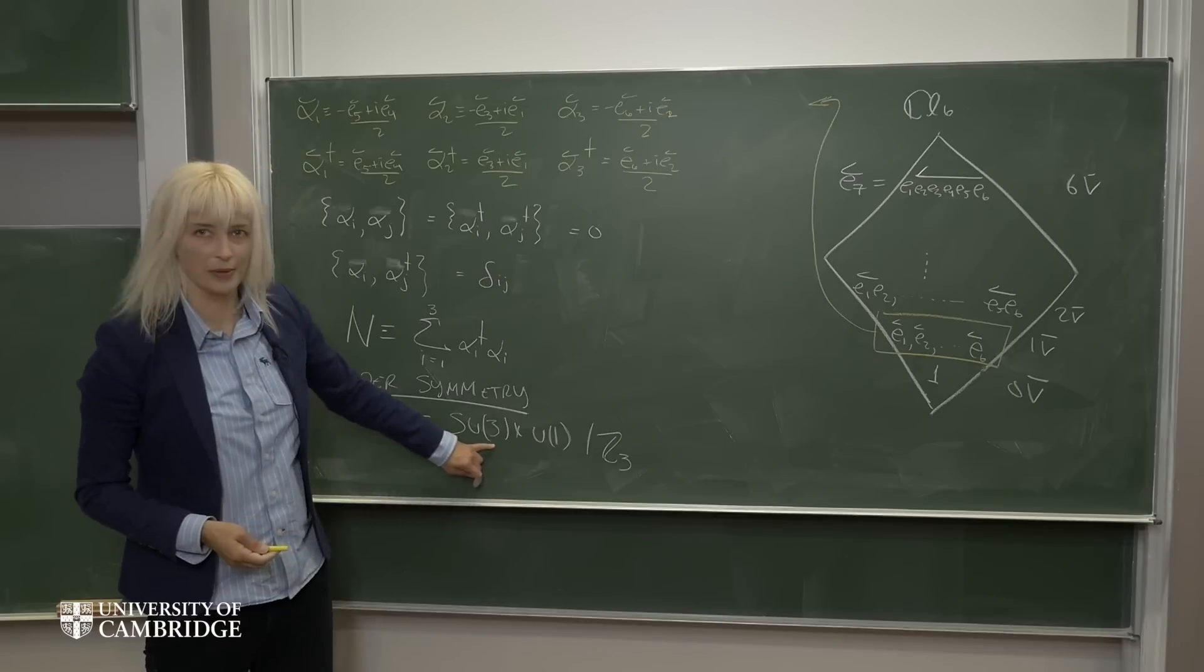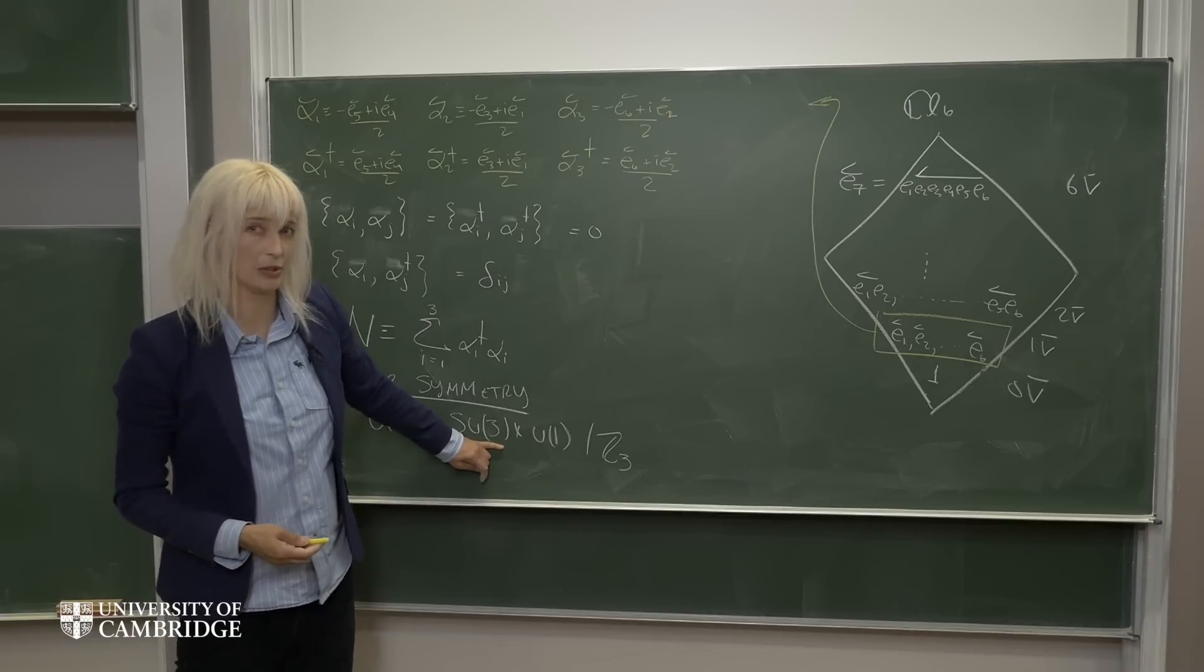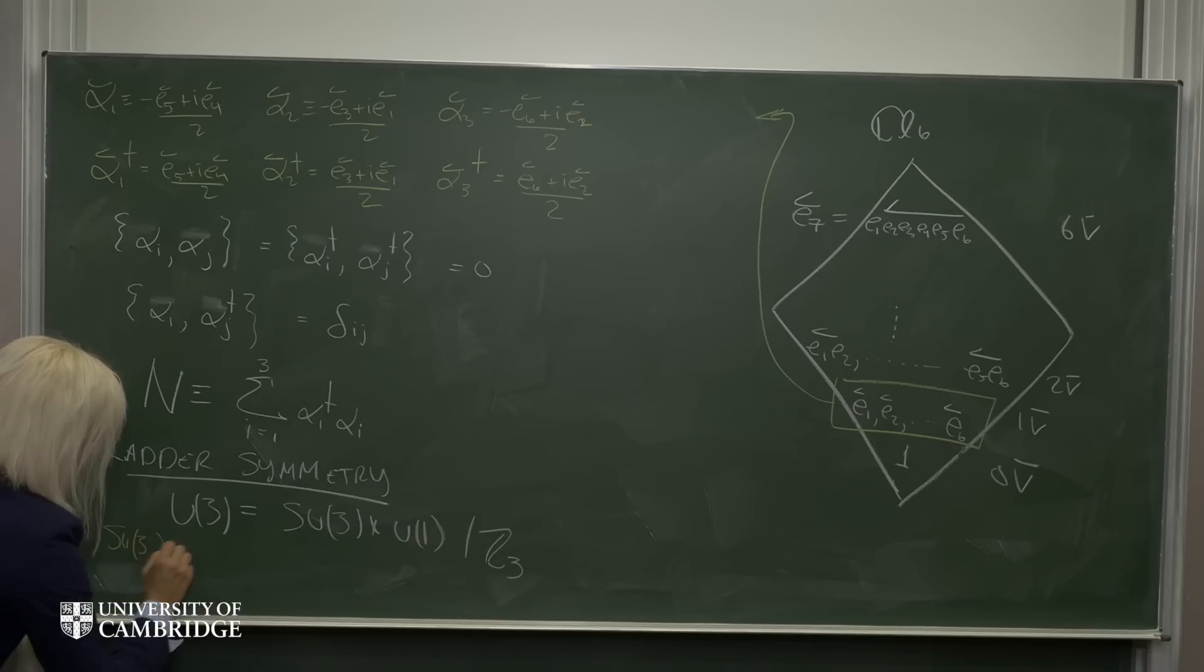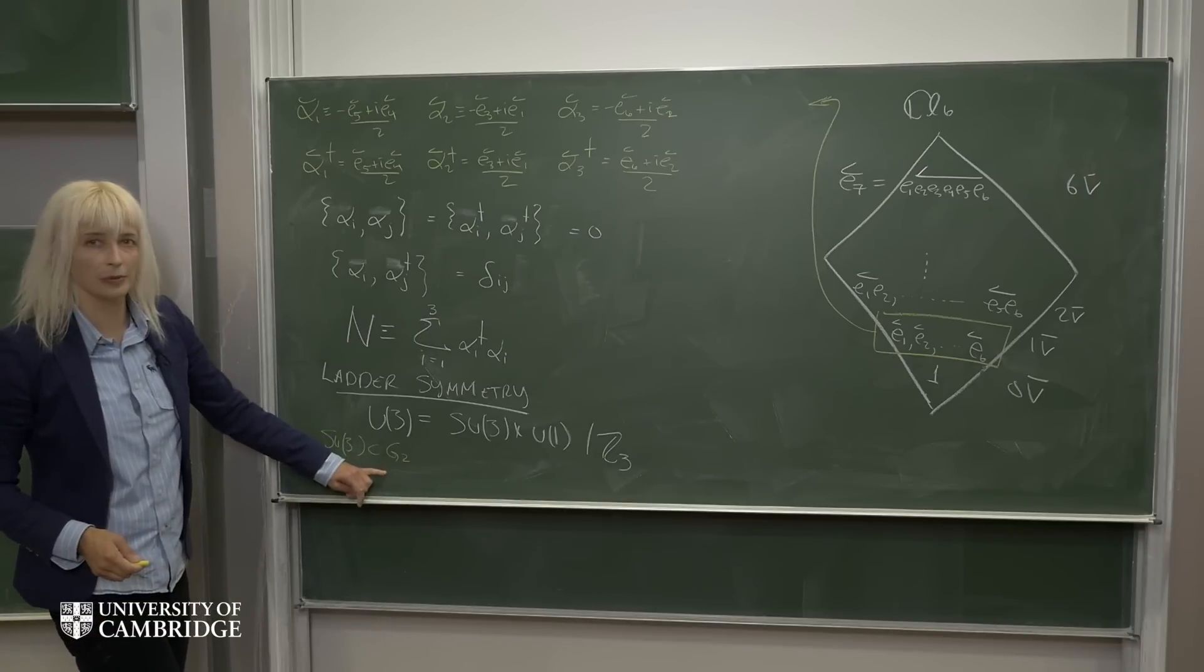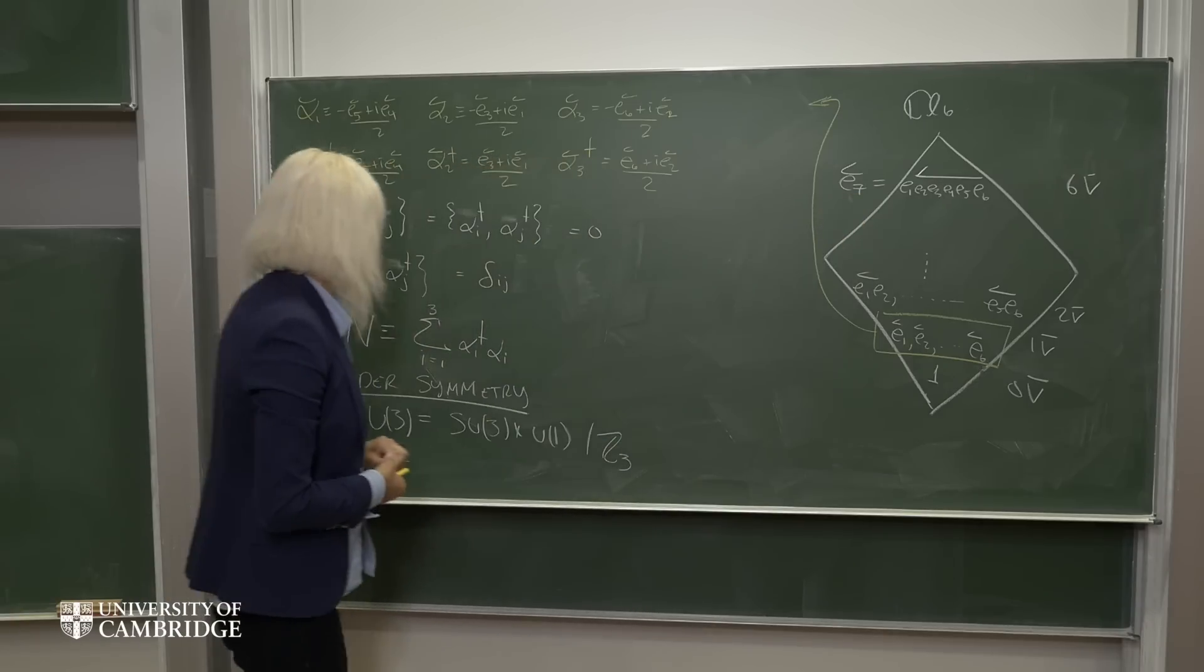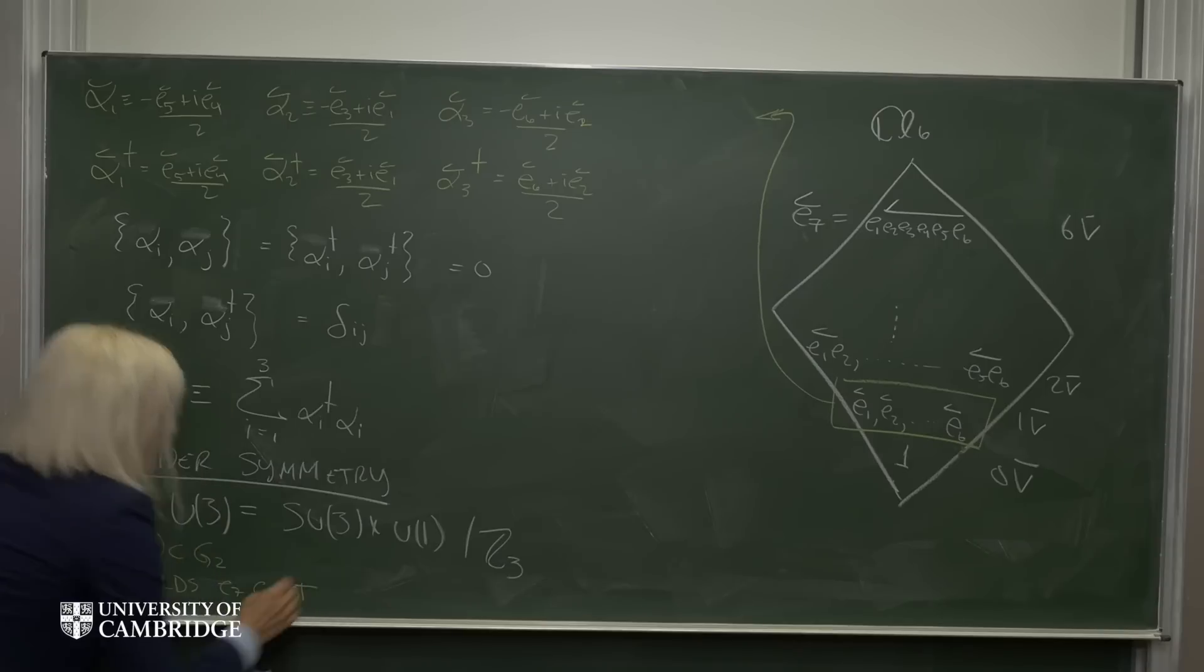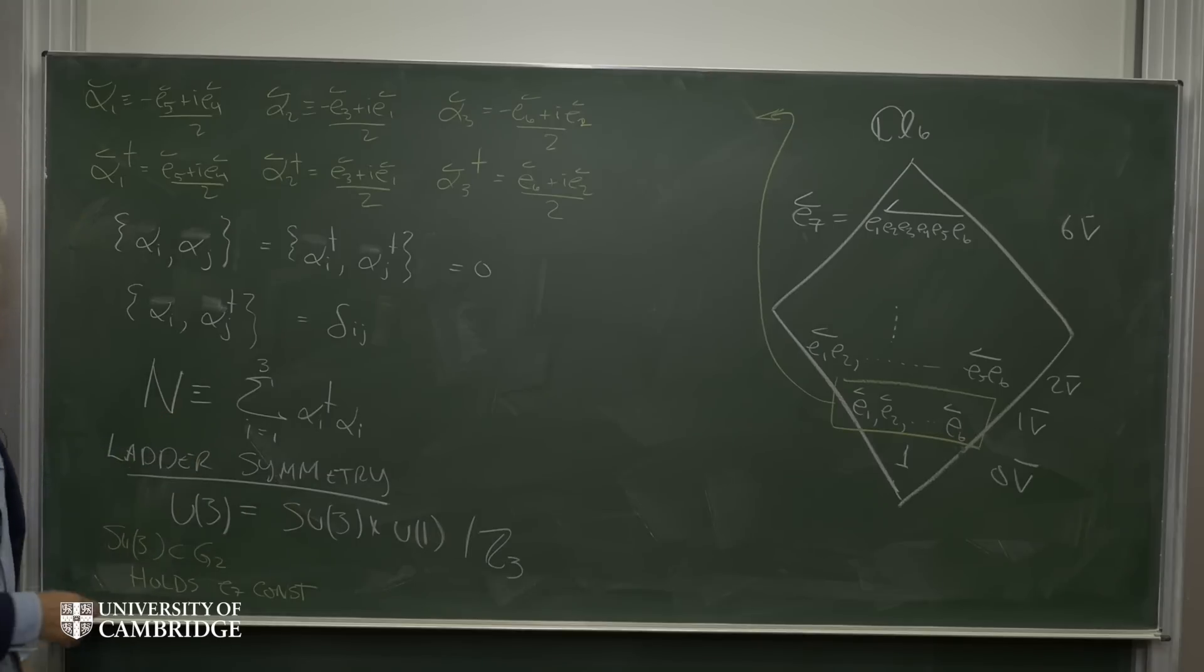And this SU3 is interesting because it happens to be a subgroup of the automorphism group G2 of the octonions. Not only is it a subgroup of G2, but it happens to be the subgroup of G2 which holds one of the imaginary units constant. And this U1 is also interesting because it happens to be generated by our number operator.